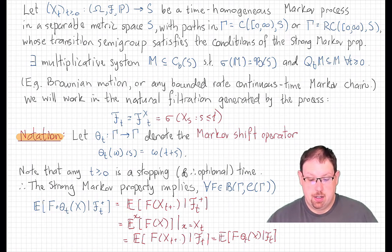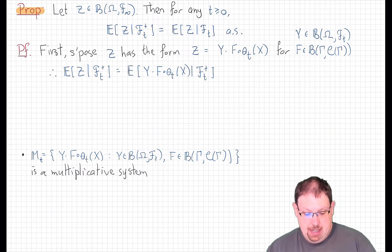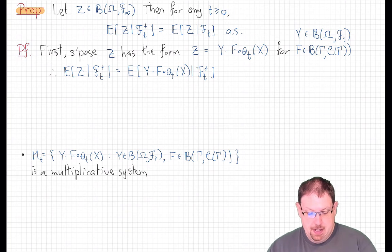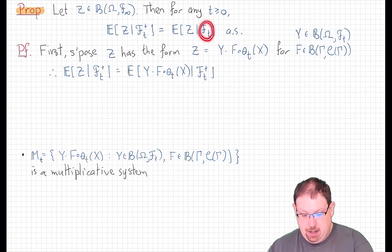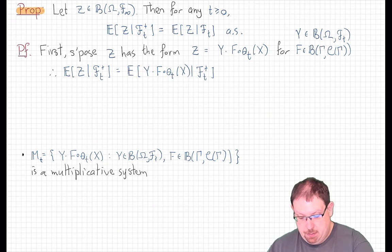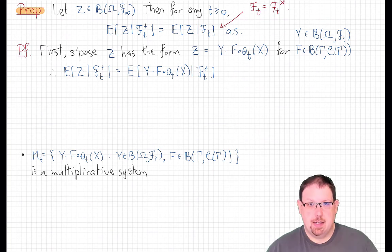It turns out that functions of the process of this form generate all functions of the process, and so that leads to the following curious lemma. If z is any bounded F_∞ measurable function on our probability space, then for any fixed non-negative time, conditioning z on F_{t+} is the same as conditioning z on F_t almost surely. To be clear, this is a statement precisely about the natural sigma field generated by the process itself.